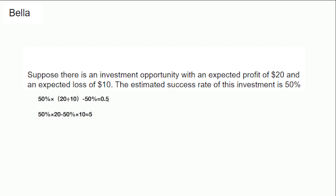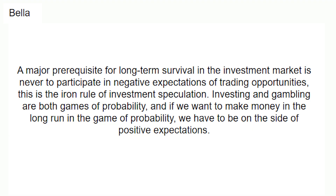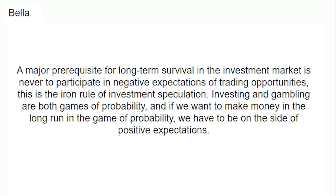Using the second formula: 50% win × expected profit $20 = $10, minus probability of failure 50% × expected loss $10 = $5, giving $10 − $5 = $5. Same result. The expected value is $5, meaning you make an average of $5 per trade over the long run. One of the main prerequisites for long-term survival in the investment market is never to engage in trading opportunities with negative expectations. This is the iron rule of speculation.